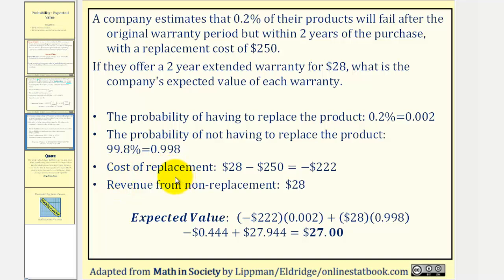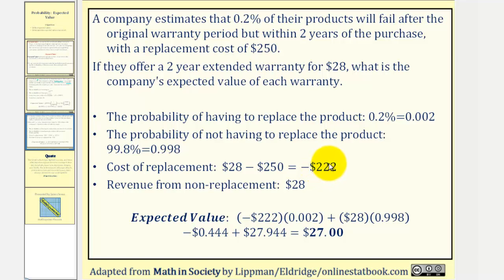The cost of replacement under warranty is not $250 — it would be the cost of the warranty minus the replacement cost. The true replacement cost for the company is negative $222.00, since it costs the company money. The revenue from non-replacement would be the $28.00 charged for each warranty. We must be careful about signs when gathering this information.